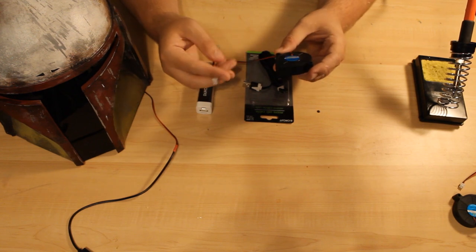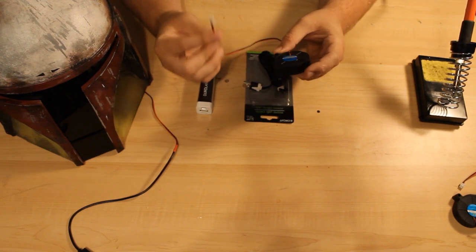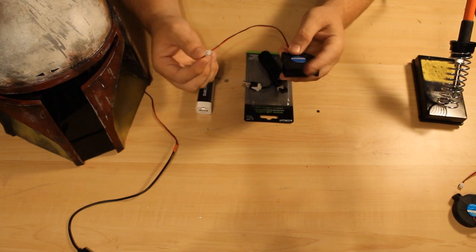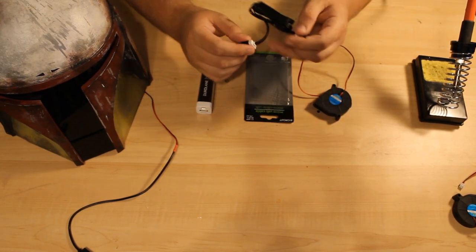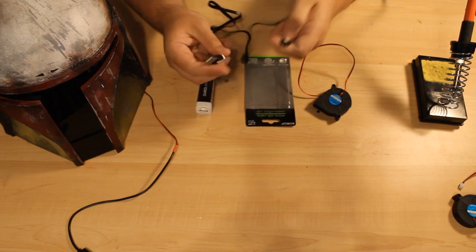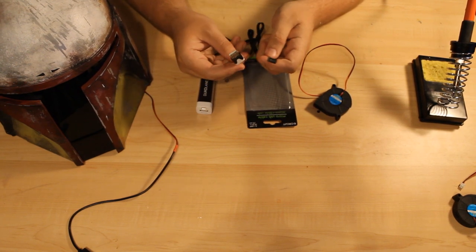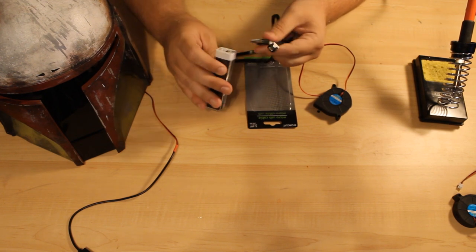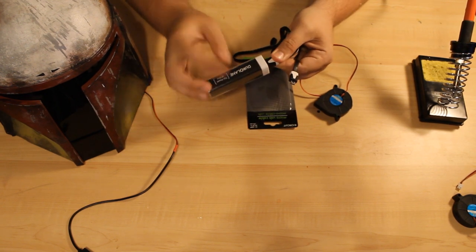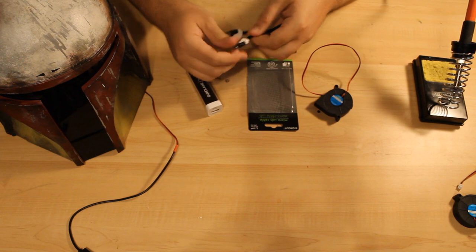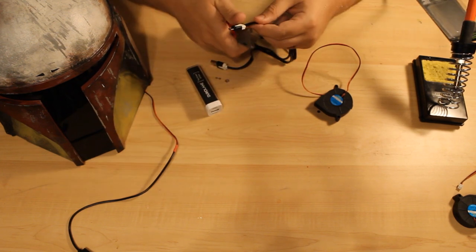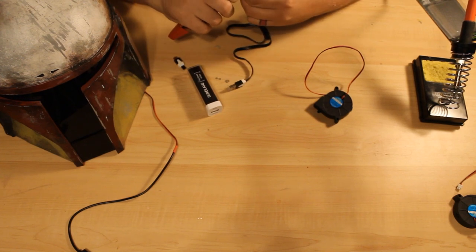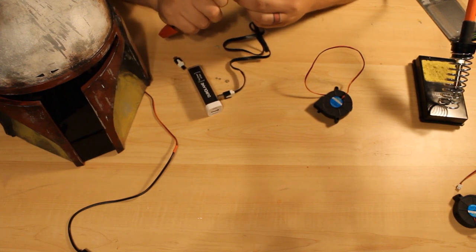The nice thing about these cords is you're going to have the positive and the negative clearly marked. Then what I do is I take the charger that I'm going to use. The USB end is the one you're going to want to keep because that's going to go into your power bank. I'm going to cut the end off. And once you've cut the end off, you're going to strip the wires.